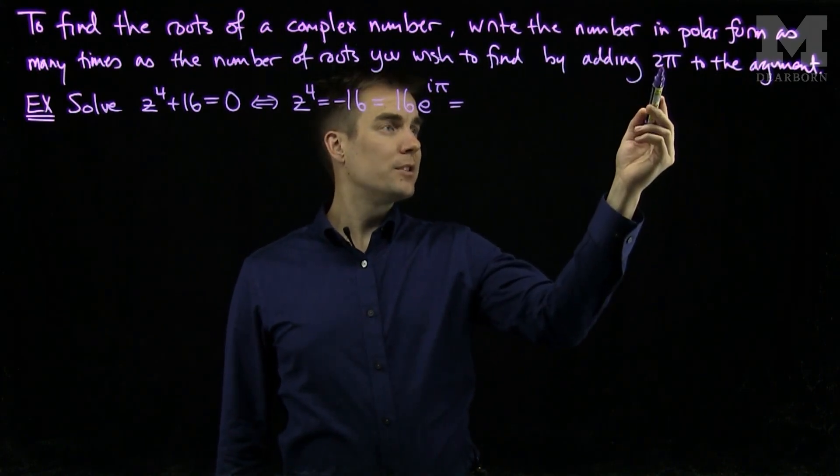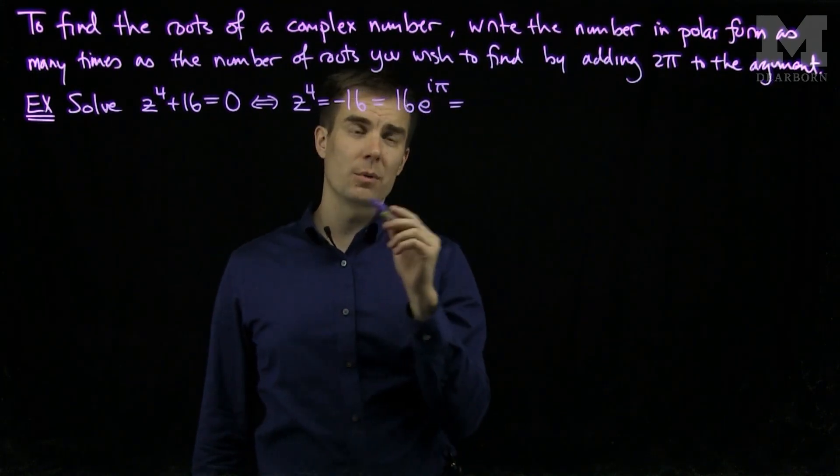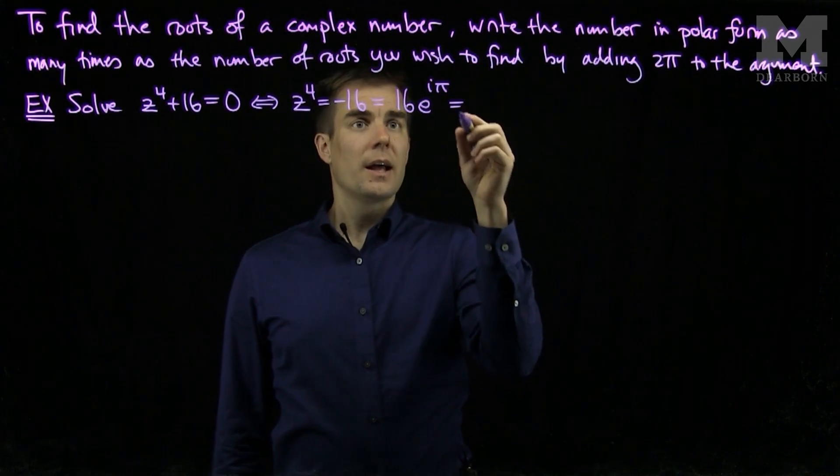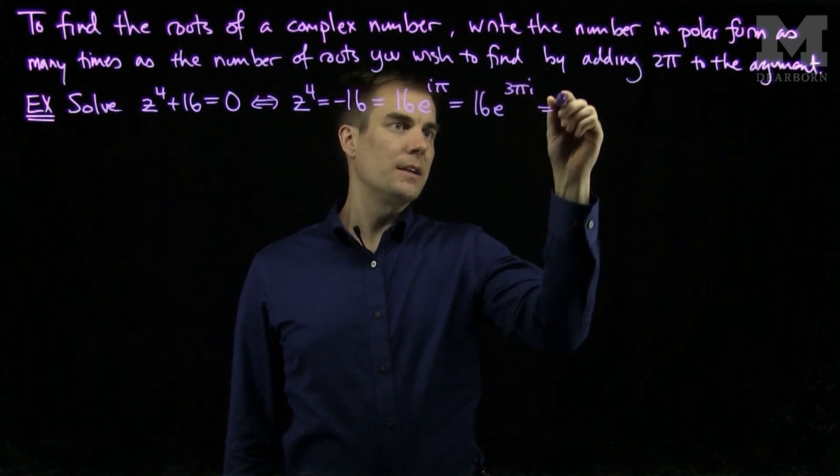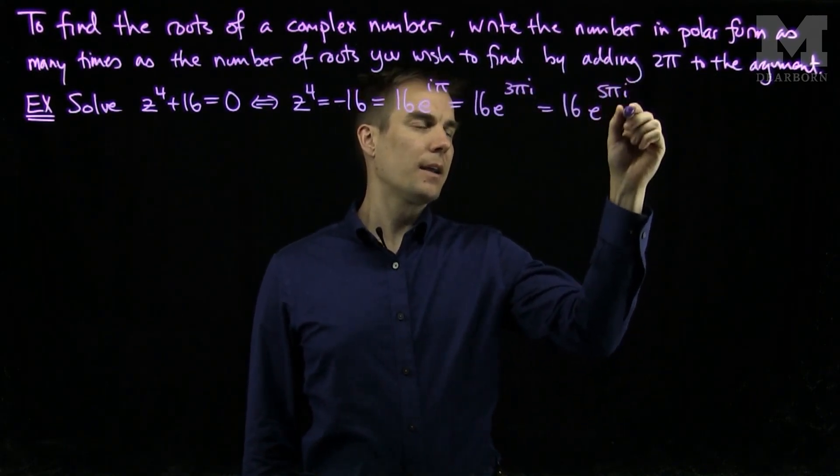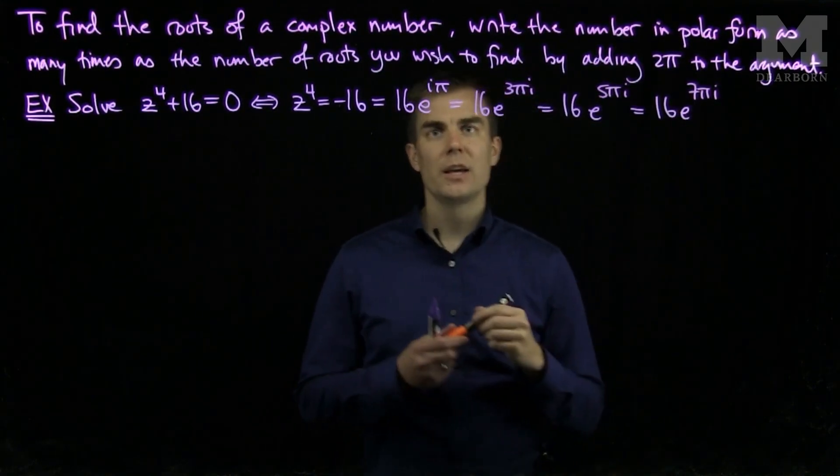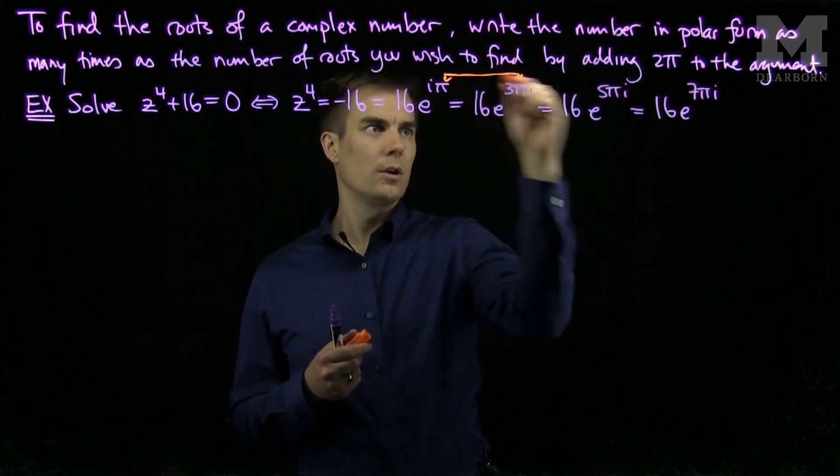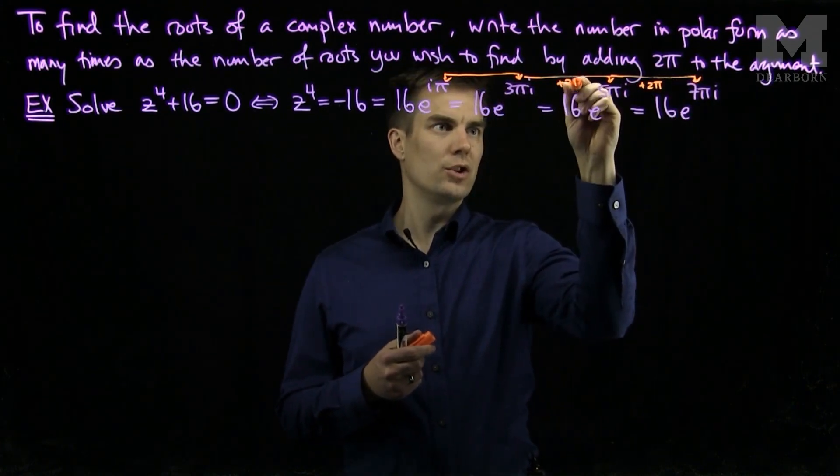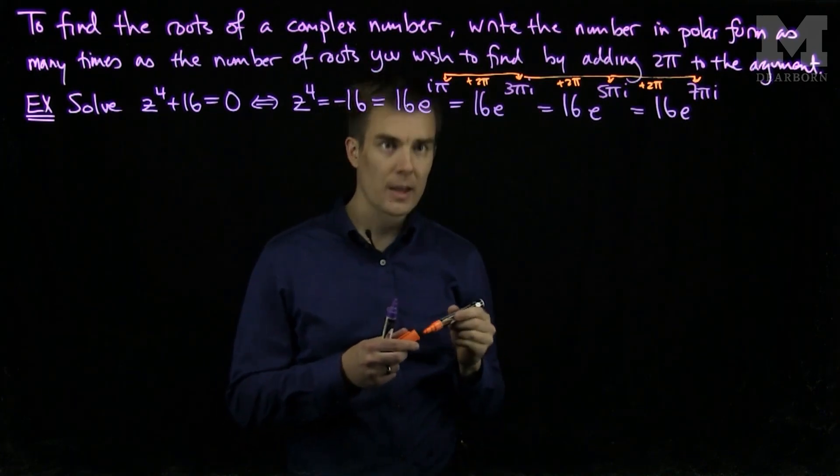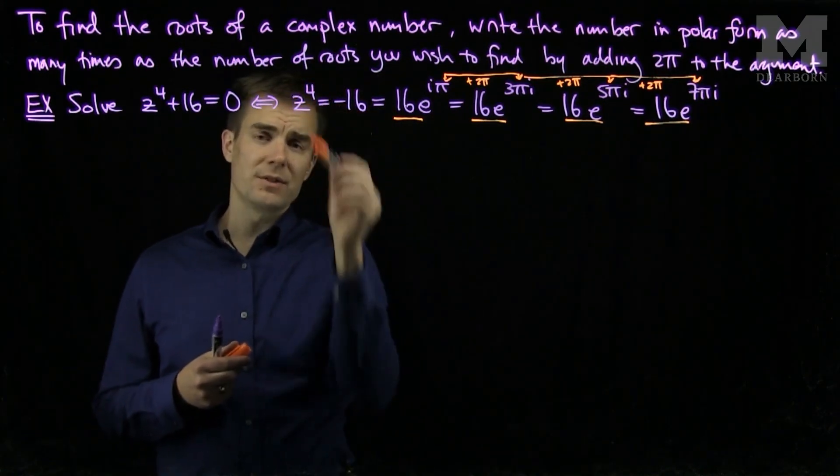According to my scheme, I will continue to add 2π to the argument until I have enough representations of the complex number as the number of roots I wish to find. So I will write 16e to the iπ as 16e to the 3πi, as 16e to the 5πi, and 16e to the 7πi. And we notice that each time I have added 2π to the argument, and I have a total of four representations of my number because I have z to the power of 4.